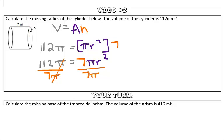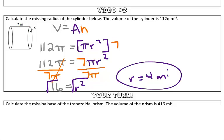The π's will be eliminated, and when we do 112 divided by 7, we get 16. So we have 16 is equal to our radius squared. To get the radius by itself, we have to take the square root of both sides. When we take the square root of 16, we have the radius is equal to 4 miles. Nice work!